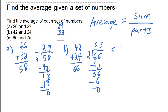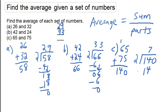In the last example, 65 and 75 have a sum of 140. Again there are two parts, so when we divide 140 by 2, we get an average of 70.